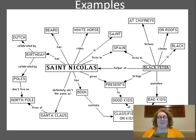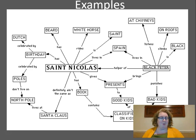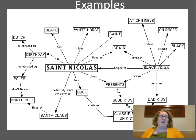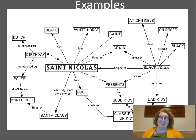The last example is a concept map about Saint Nicholas. Look at all the cross-links: connecting Saint Nicholas to Black Peter, showing how Saint Nicholas relates to Santa Claus, and cross-links between Black Peter and Saint Nicholas. You can see a whole circle from Saint Nicholas to birthday to poles to North Pole to Santa Claus. All of this shows that this student has a really deep understanding of Saint Nicholas. These three examples illustrate how a concept map reveals the schema a student has about a particular concept.